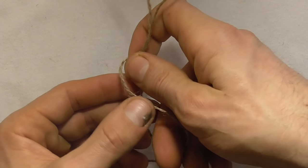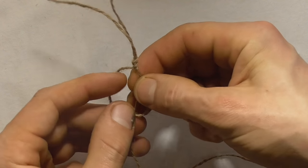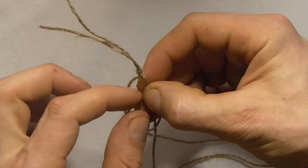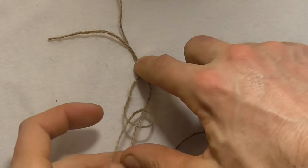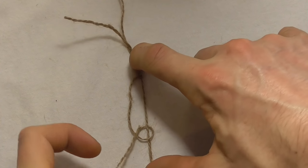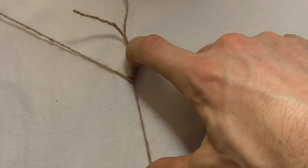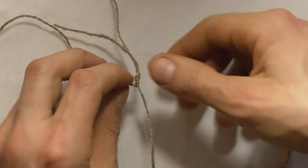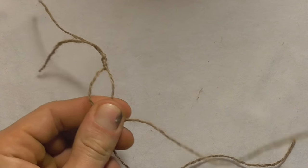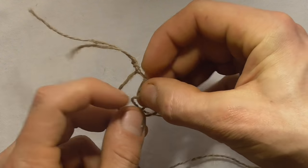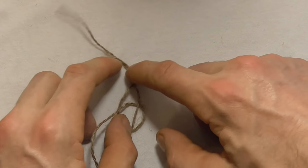We just need to repeat that: cross it over, come up through that loop, and then to tighten it off, make sure the short piece here is vertical and tighten it up. Now we just need to keep repeating that process until the bracelet becomes long enough to go around our wrist.